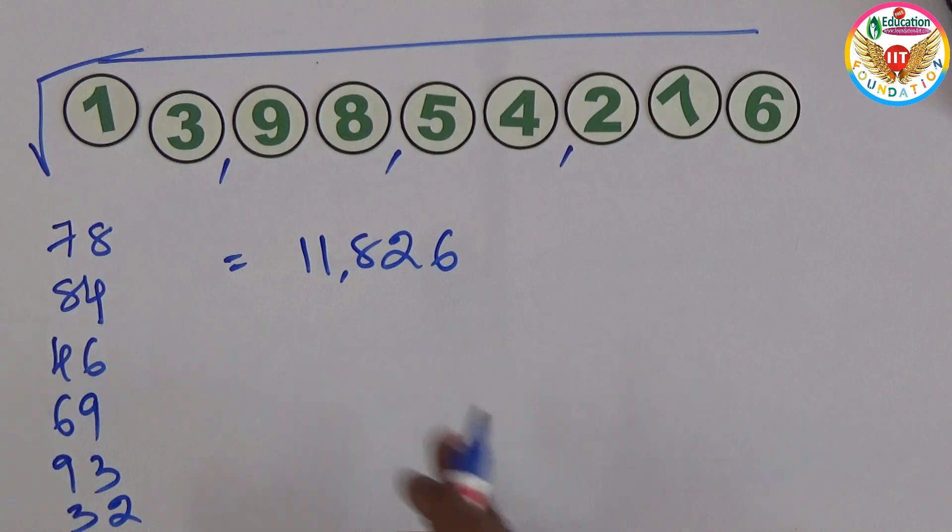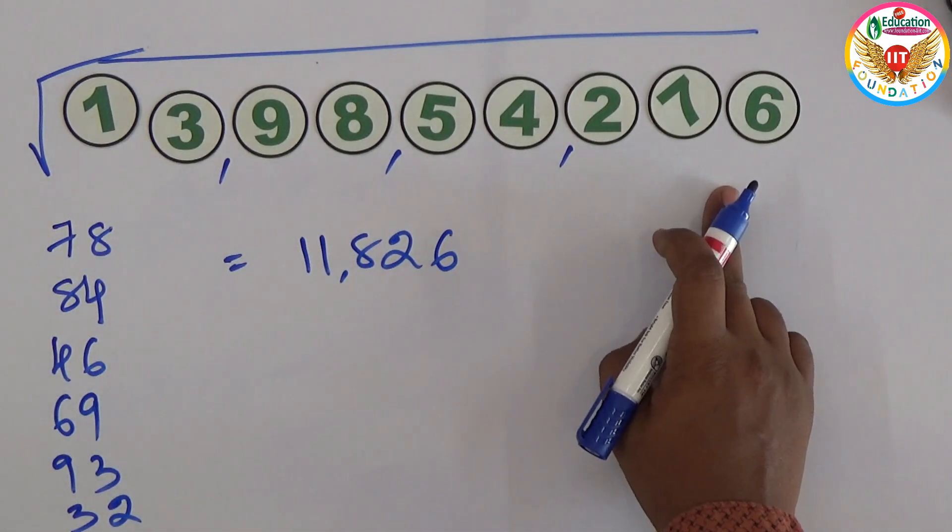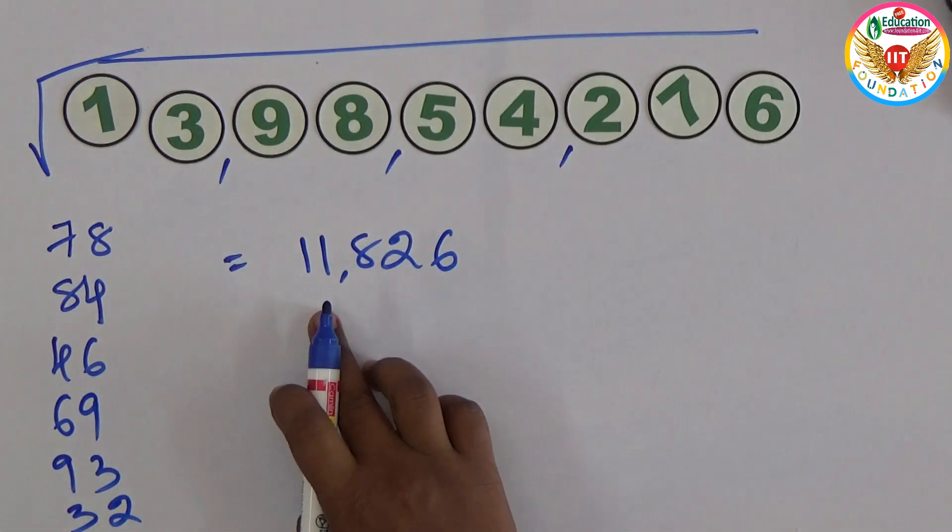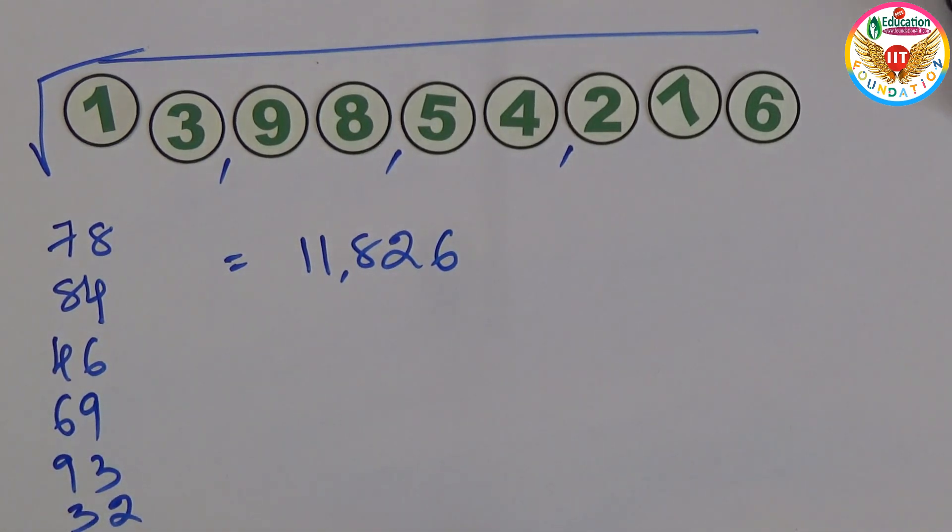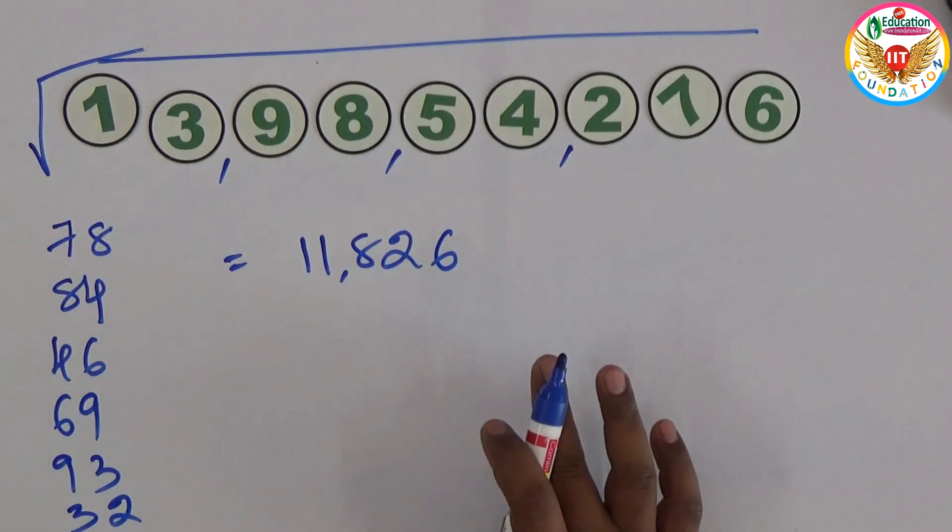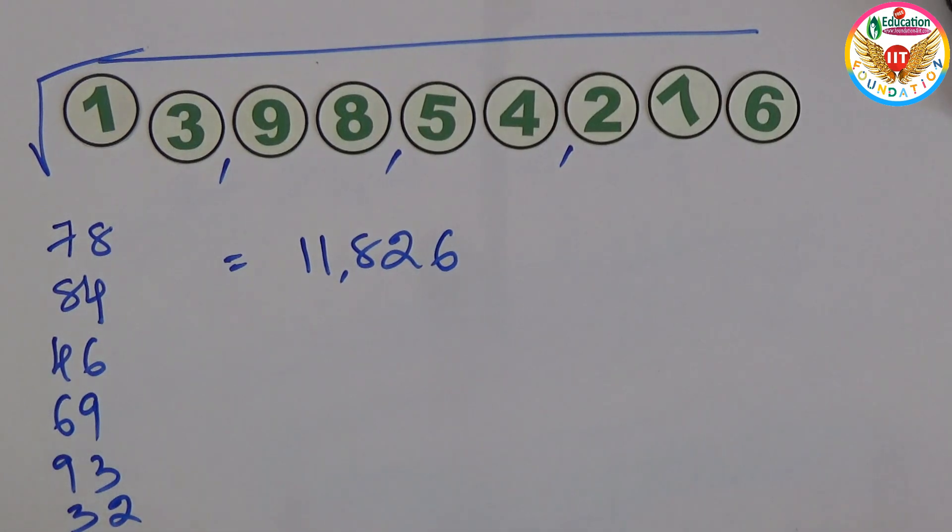It's a perfect square. This number is a perfect square. Square root of this number is 11,826. But I did 1, 2, 3, 4, 5, 6 moves. Instead of six moves, is it possible with only four moves? Let me show another example with only four moves, not six.